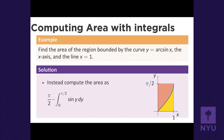This integral measures the area of the salmon-colored region. Subtracting from π/2 (the whole rectangle) leaves the gold region, which is what we wanted. The salmon-colored region has area 1, the whole rectangle has area π/2, so the leftover piece has area π/2 - 1.